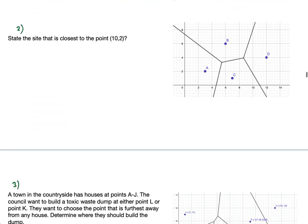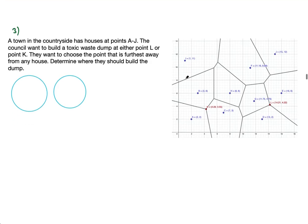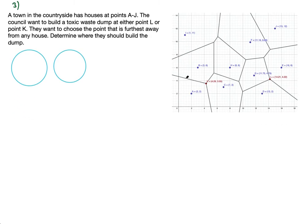The second question is pretty straightforward. It says: state the site that is closest to the point (10, 2). The point (10, 2) is here on the diagram. Which site is closest? The sites are A, B, C, and D. This is just testing that you understand how Voronoi diagrams work — the point (10, 2) is in the region of D, so its closest site is D. Obviously if it were elsewhere it would be C, B, or A.